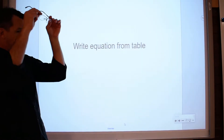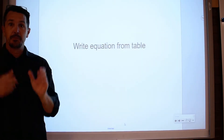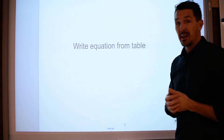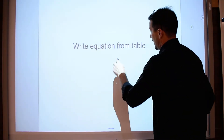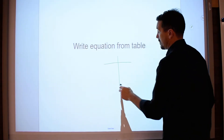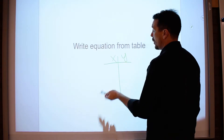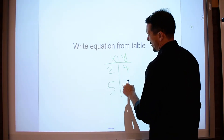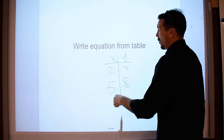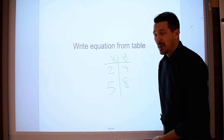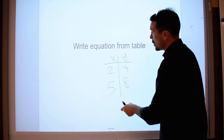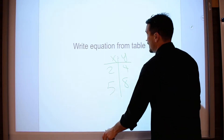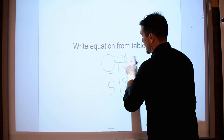We're going to be talking about writing equations from a table. People get all scared about this, but really, if you think about it, in the activity we did above, we have two points, like 2, 4 and 5, 8. Isn't that a table? There's only two points on the table, but isn't that a table? So you actually already know how to write an equation from a table.